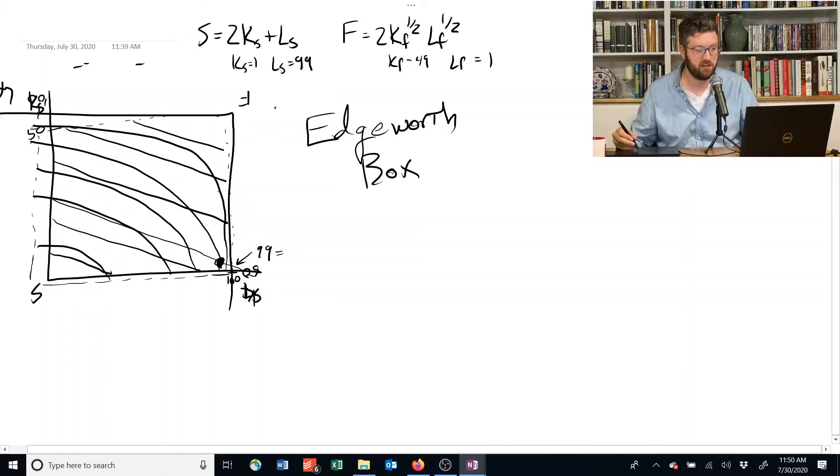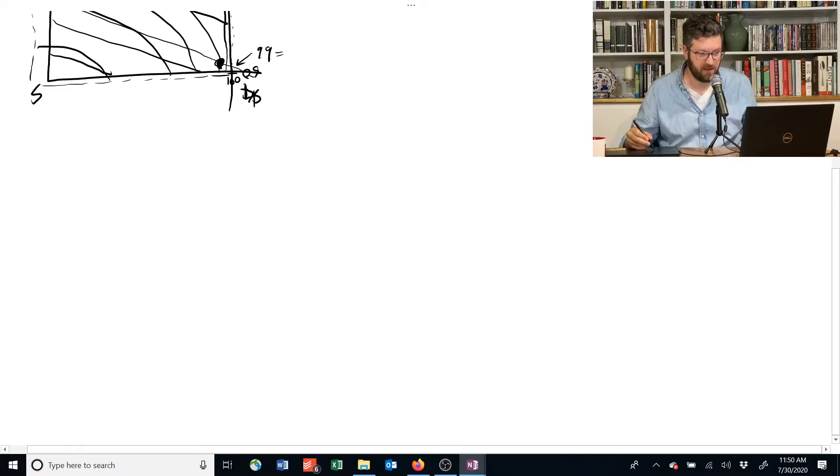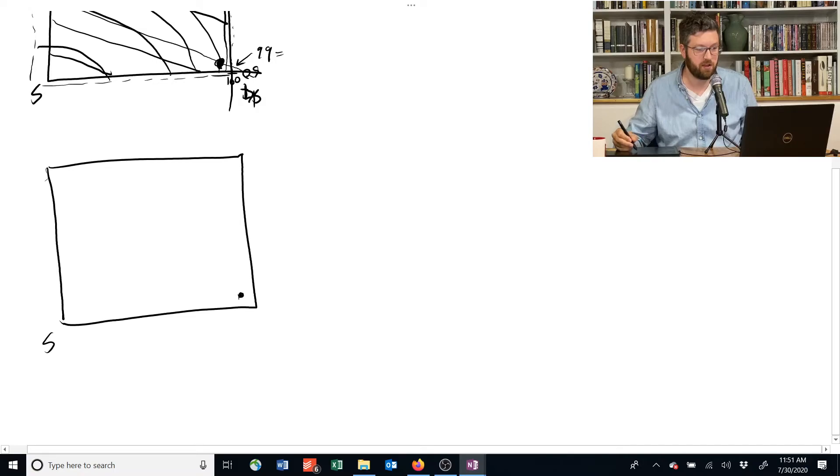It's a little bit hard to see here because all the names are covering each other up. So let me draw one more Edgeworth box below it. That will be just a cleaner version of the same thing. The allocation is right there. Shelter from that corner, food from this one. And we've got straight lines going through it.